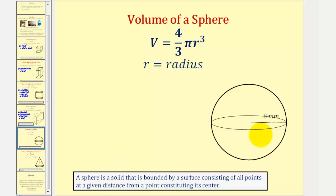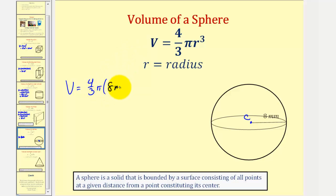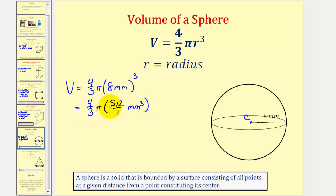Next we have a sphere, pictured here. A sphere is a solid bounded by a surface consisting of all the points at a given distance from a point constituting the center. For our sphere the radius is eight millimeters. The volume is equal to four-thirds pi r cubed. Therefore, the volume of our sphere is equal to four-thirds times pi times eight millimeters cubed. Eight cubed is equal to 512, so we have four-thirds pi times 512 millimeters cubed. Nothing simplifies, so the exact volume is 2048 over three pi millimeters cubed.